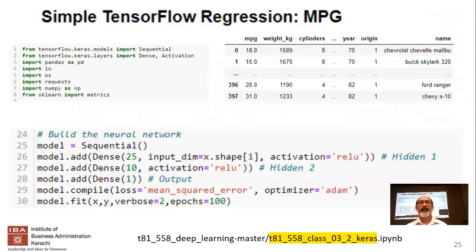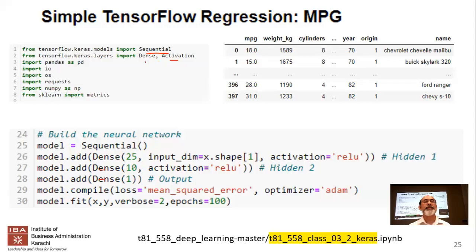In TensorFlow, you define a sequential model, which simply means the layers are in sequence. You import an activation function and a dense layer — dense means every neuron in one layer is connected to every neuron in the previous or subsequent layer. You also use pandas and sklearn. The model is initially defined as sequential, and then you add layers.